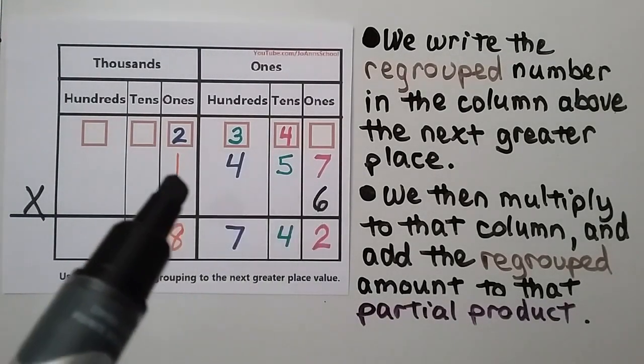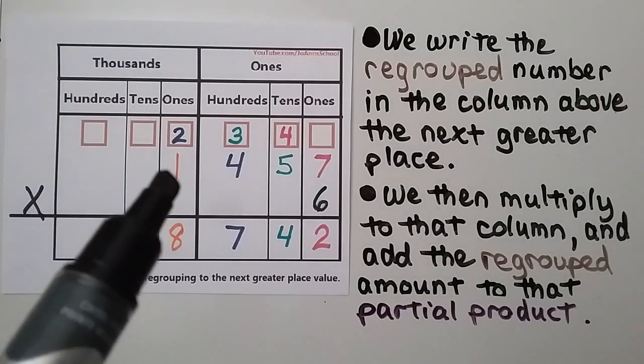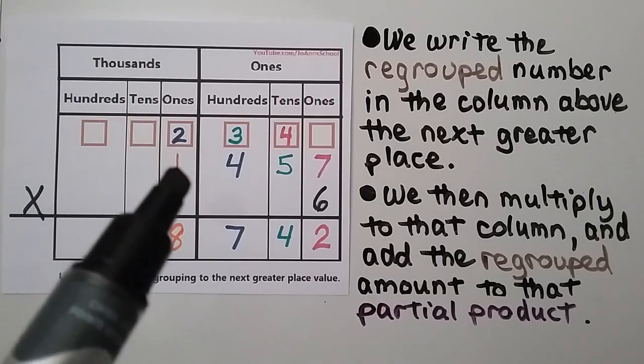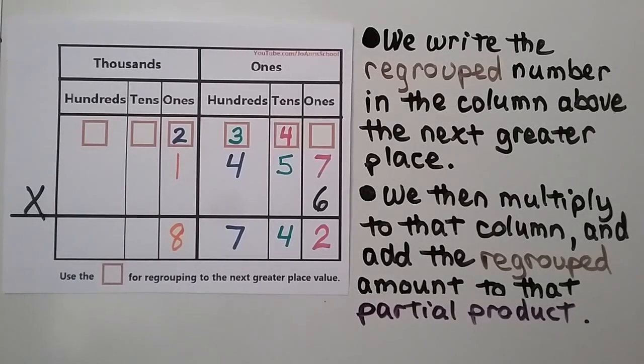Then we do 6 times the 1 — the one thousand — which is 6. We add the 2 more, which is 8. We have 8,742.